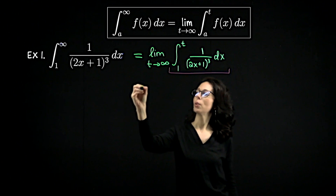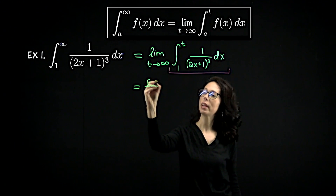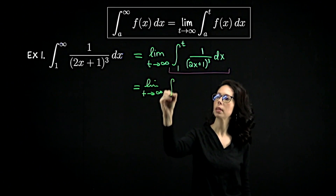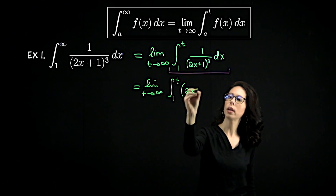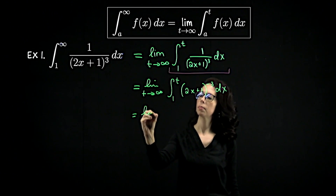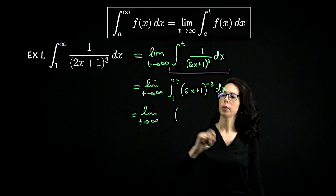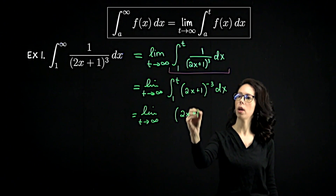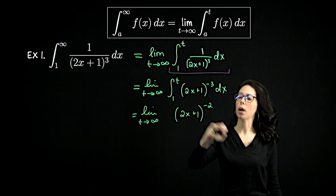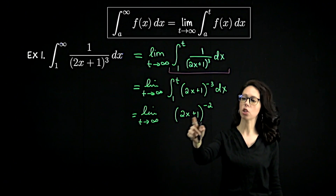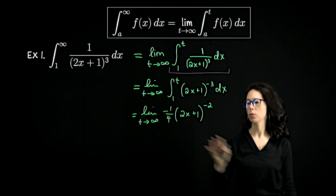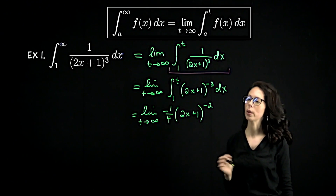Let me keep writing limit as t goes to infinity — you want to keep this around until you actually take the limit. Let's rewrite the integrand as (2x+1) to the negative 3 so you can really see the power rule. We can anti-differentiate right away. The antiderivative is negative 1/4 times (2x+1) to the negative 2, because differentiating would bring down a −2 and also pick up a 2 from the chain rule, giving a factor of −4, which we cancel with the −1/4 out front.